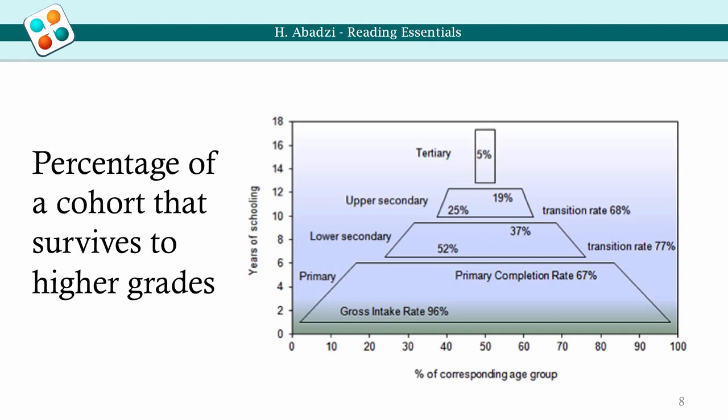Data shows that a large percentage of enrolled students fail to learn and drop out illiterate. In sub-Saharan Africa, about one-third drop out early and may learn very little before doing so. About 67 million children are out of school, and 200 million more may be in school but not learning. Overall, only 33% of children in these countries are meeting minimum curricular requirements.